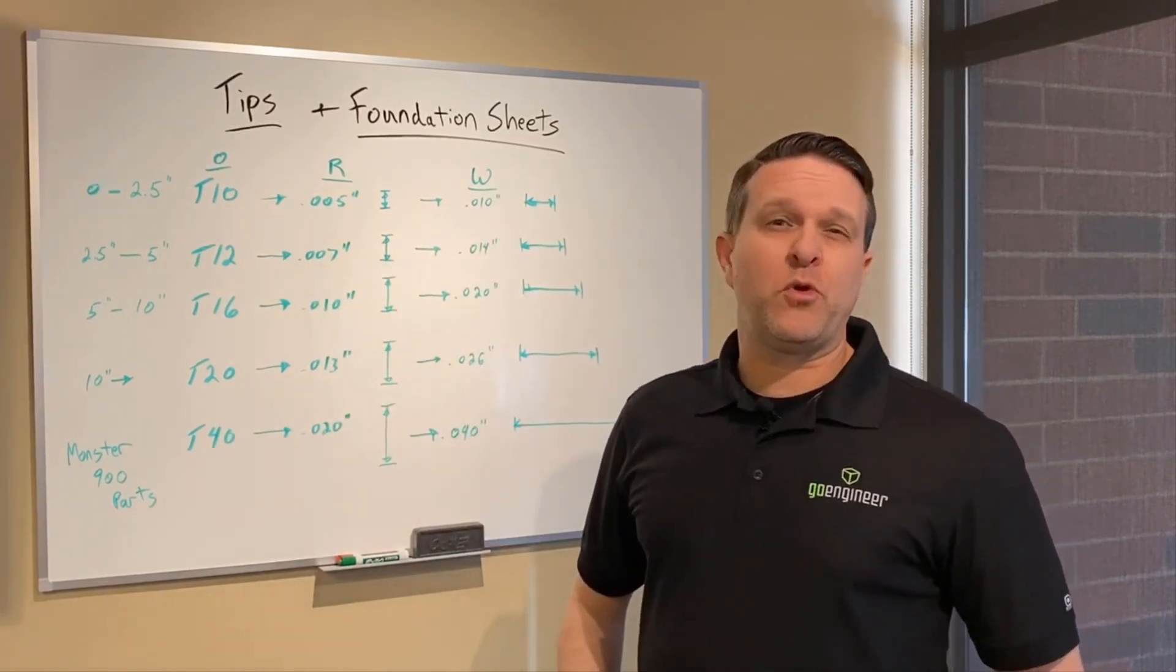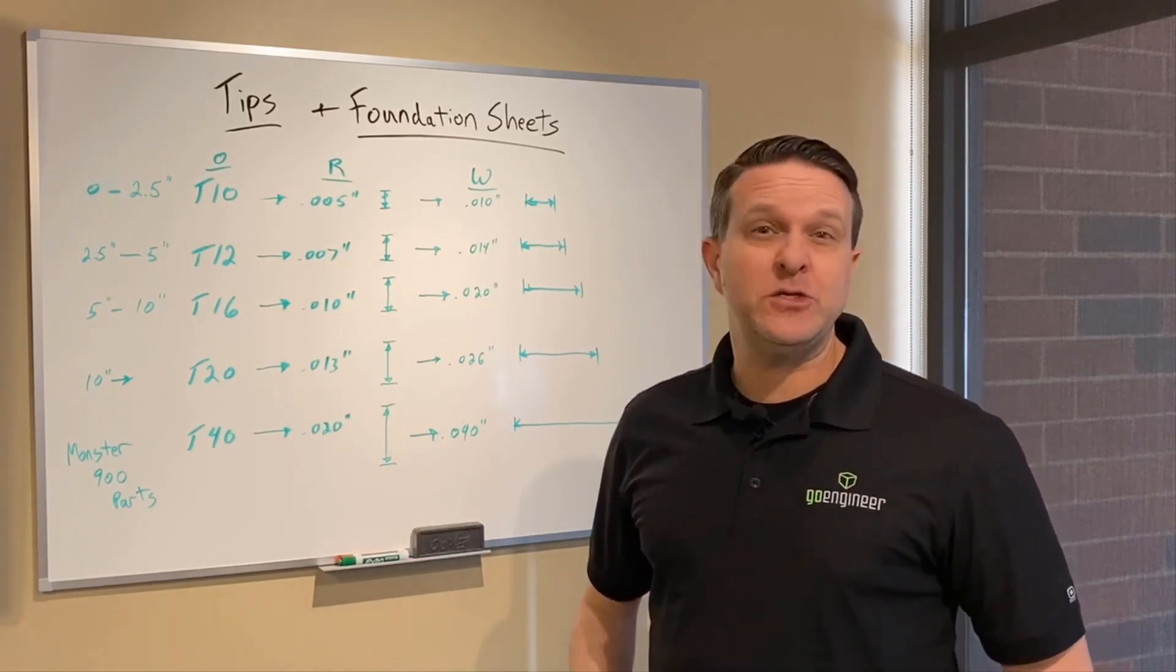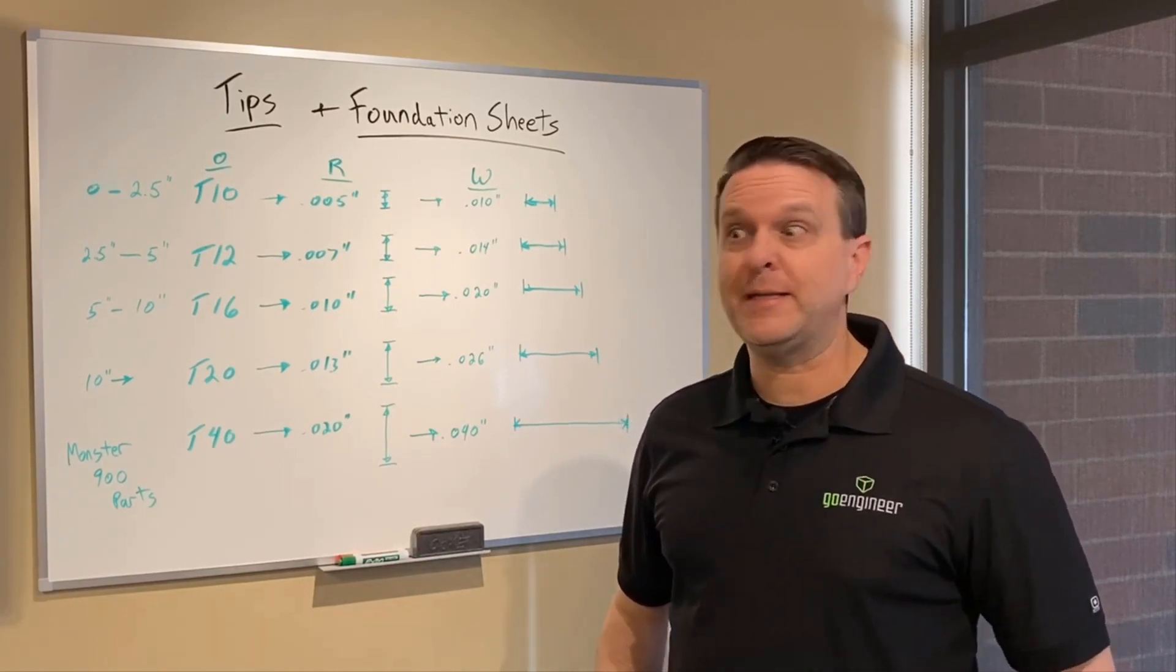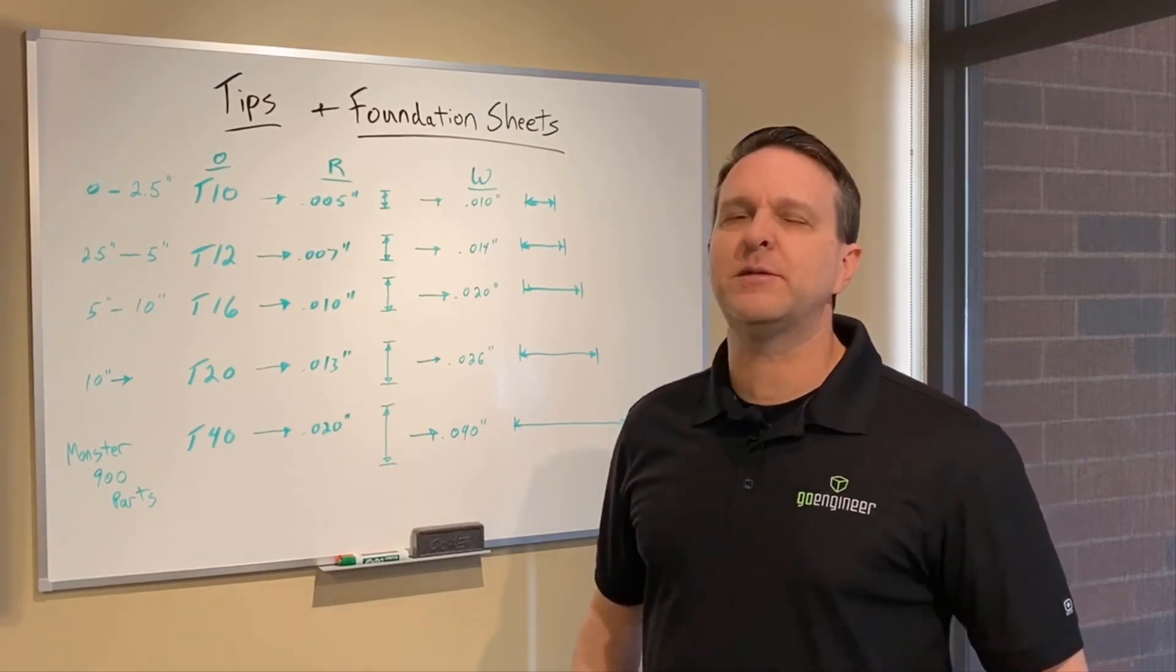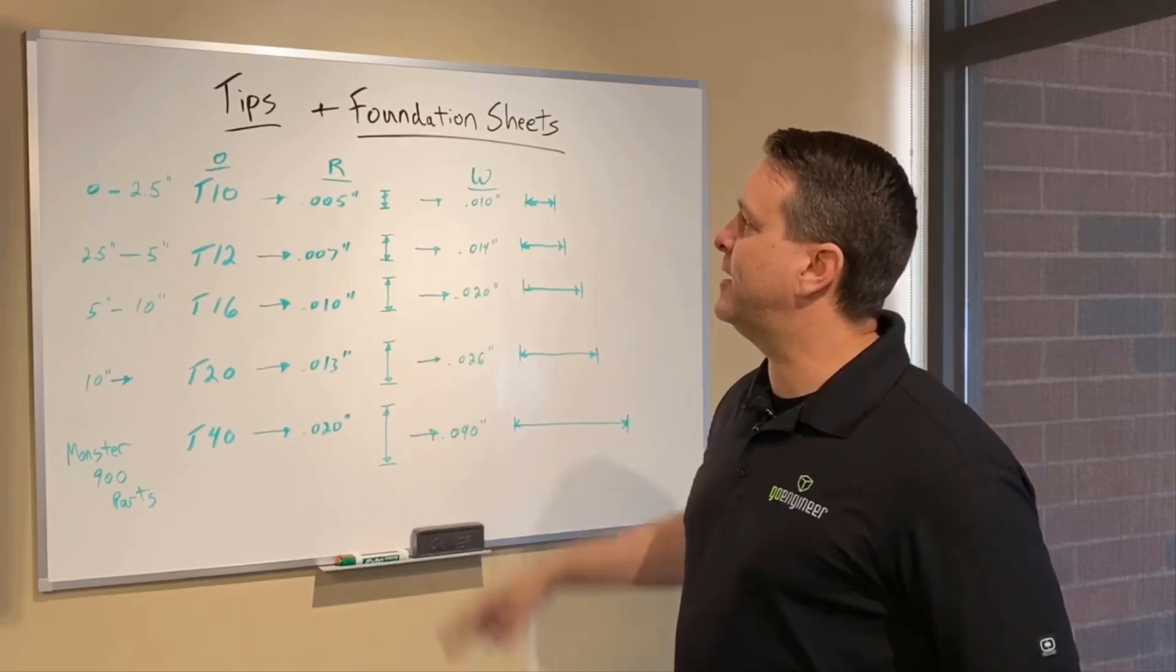When you look at the tips, you're ordering them, they're going to say T10, T12, T16. What the heck does that even mean? And why would I want that specific tip? What's the purpose of it? Let me break that down.